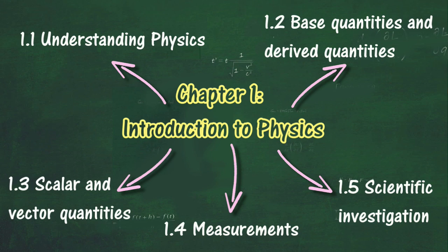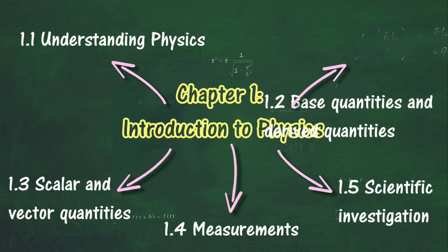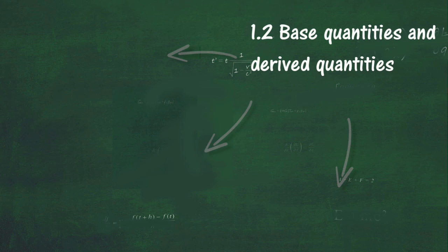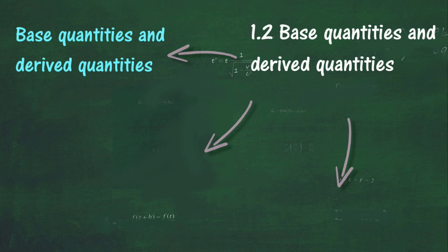In section 1.2, we will learn about base and derived quantities. At the end of this section, you should be able to explain what base quantities and derived quantities are, list base quantities and their units, and list some derived quantities and their units.